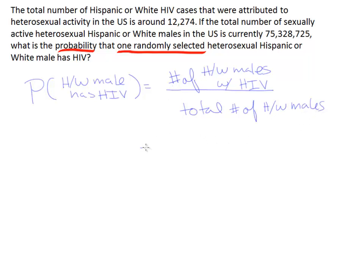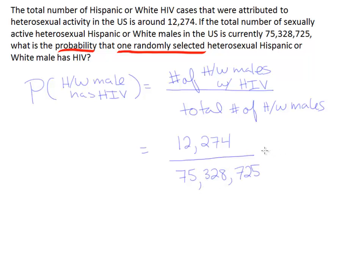These numbers are found in the problem. It tells us there are 12,274 cases of HIV in this group, and the total number of Hispanic or white males in the country is 75,328,725. So this problem is that simple — it's just a matter of finding the probability that some member of this group has HIV, using a simple basic fraction.